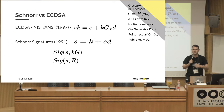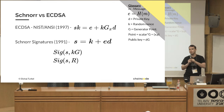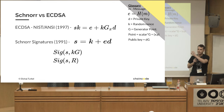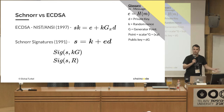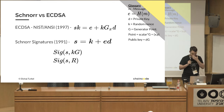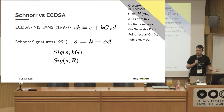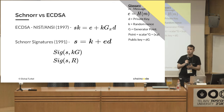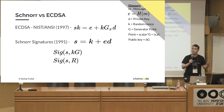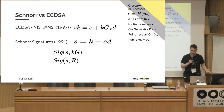One thing to note is that this is a one-way function, meaning the only way to take a point and go back to the scalar is by breaking discrete log. D, which is the private key, is a scalar, and your public key is actually just D times G — it's the point corresponding to the private key.